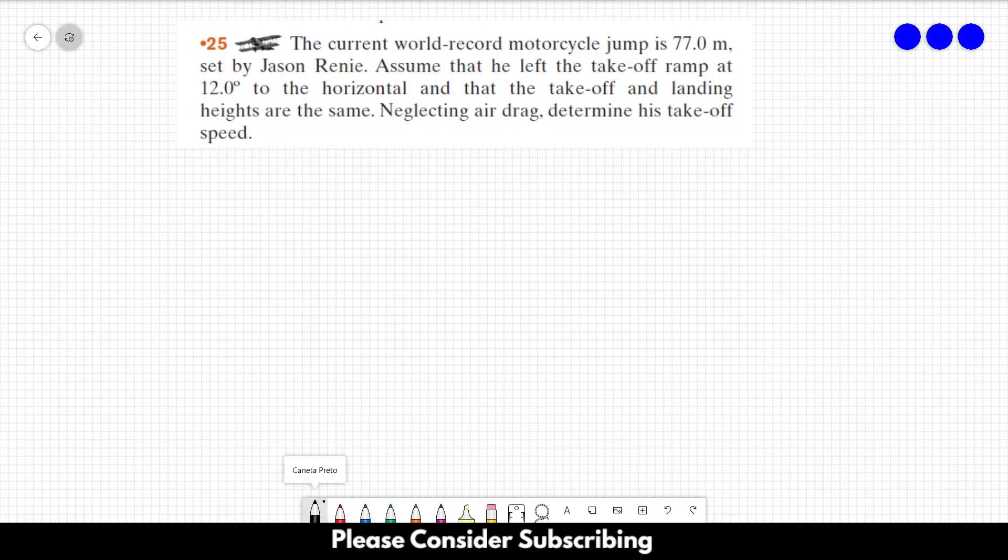Number 25. The current world record motorcycle jump is 77 meters set by Jason Rennie. Assume that he left the takeoff ramp at 12 degrees to the horizontal and that the takeoff and landing heights are the same.